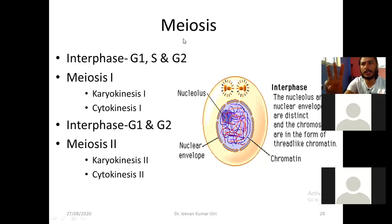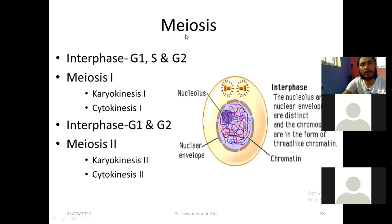From one cell, four cells are forming and the number of chromosomes is reduced into half. And this occurs in case of humans during gamete formation, that is gametogenesis, during sperm formation and during ovum formation. So this is the meiosis cell division.